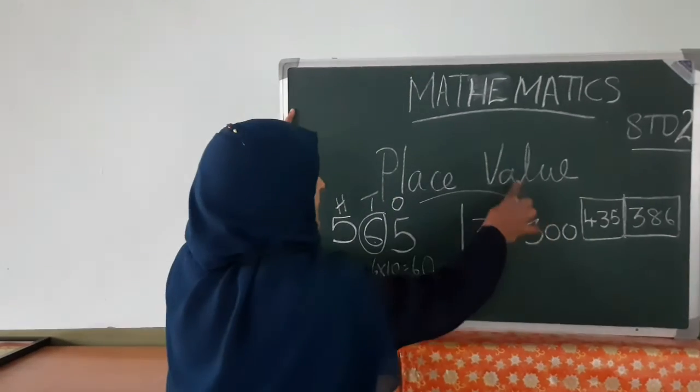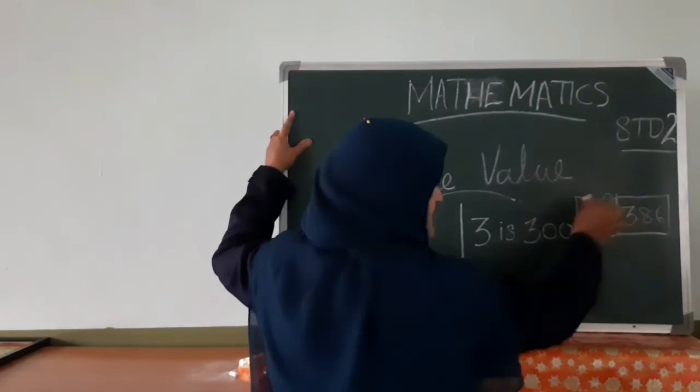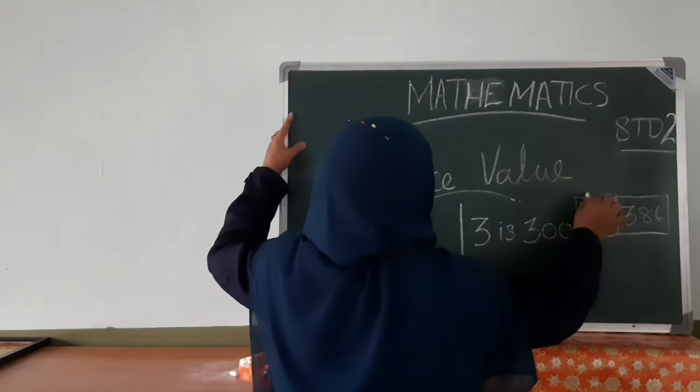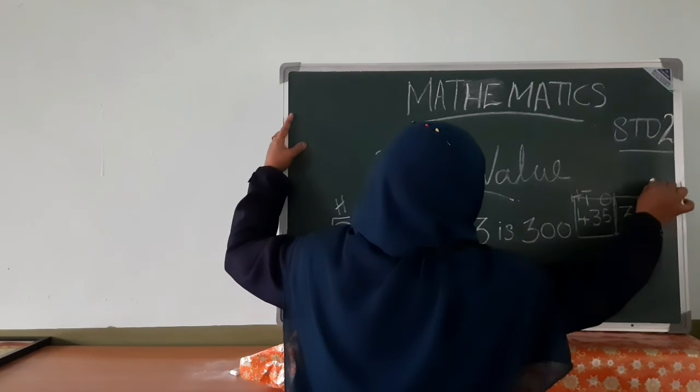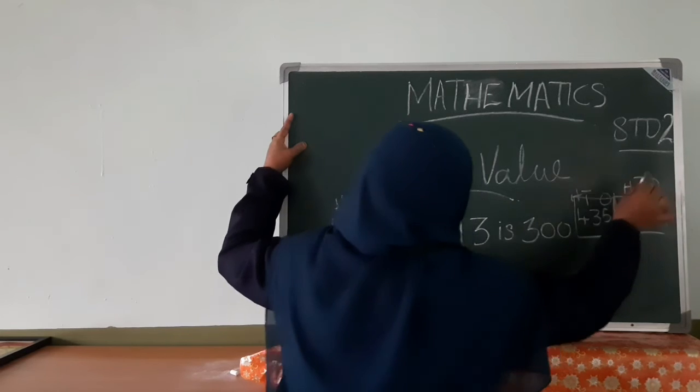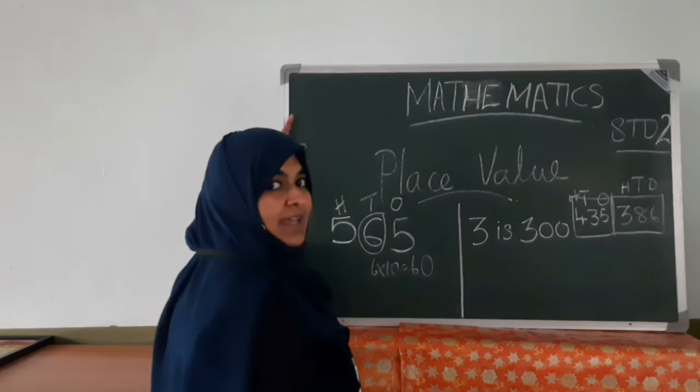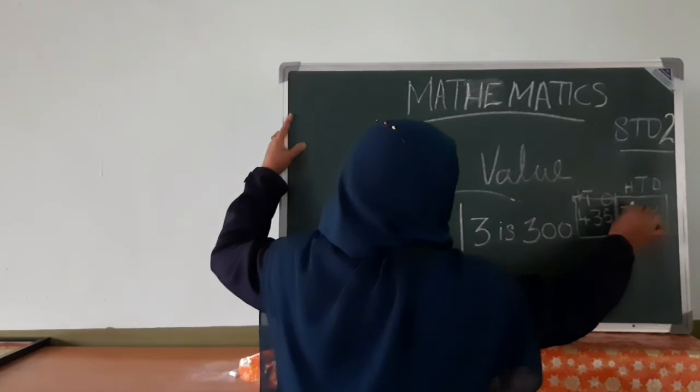First, you mention one place, tenth place, hundred place. Here, one place, tenth place, hundred. In which place? Three? In hundred place, which number? This number.